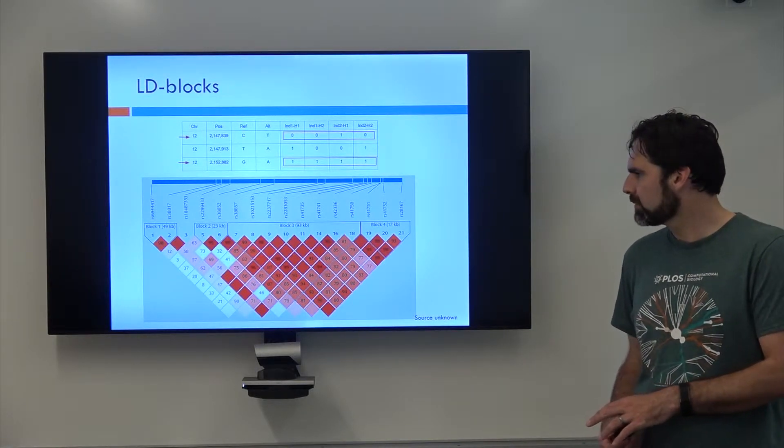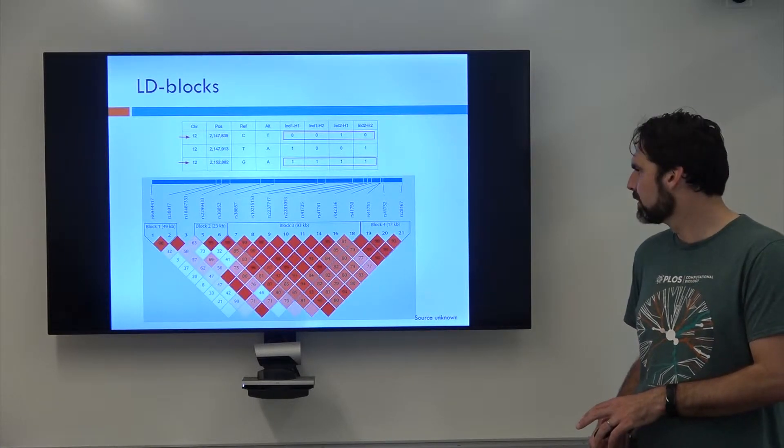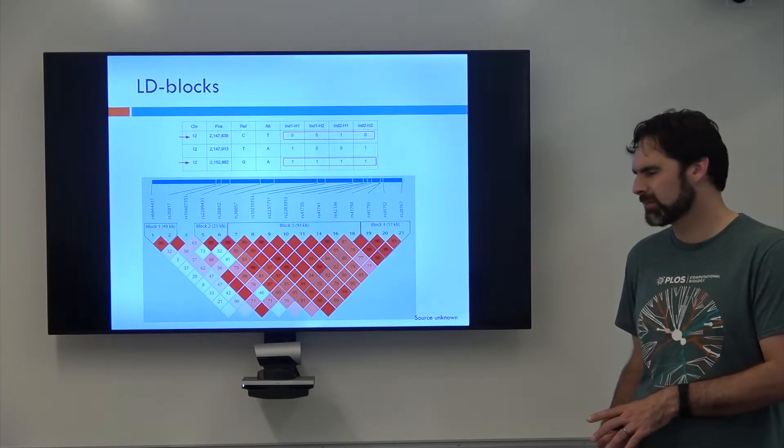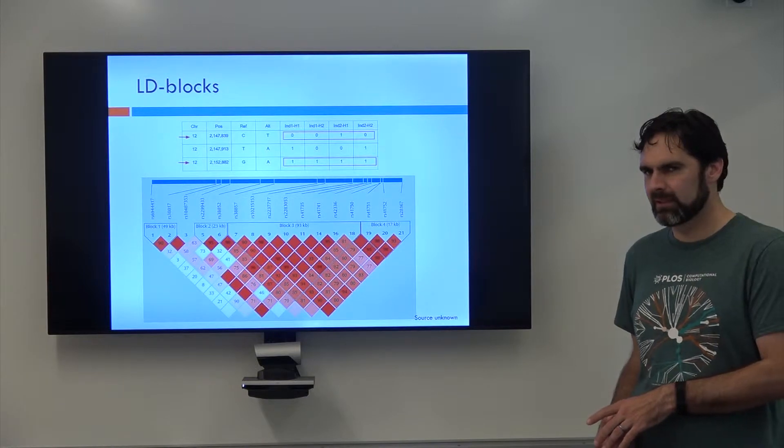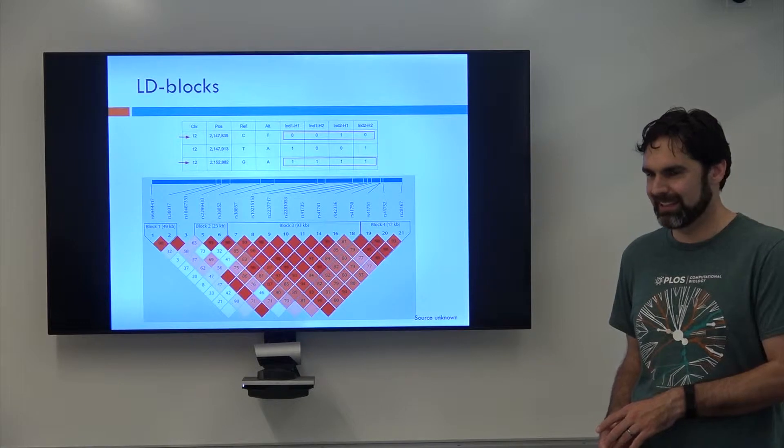I guess it could also represent... So those numbers could also represent the number of times that a recombination event was observed. But then I don't know what the color is. So... Yeah. So there's a... We reuse images to mean many different things. Yeah.